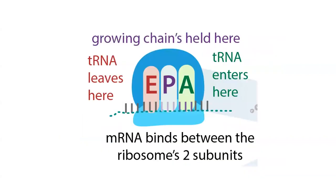Within the ribosome, you have the E, P, and A sites. The P site is the peptidyl site, where the growing chain is held. The A site — the aminoacyl or arrival site — is where the incoming tRNA comes in holding the amino acid corresponding to the codon currently in that site. After the pass-off, the old tRNA gets kicked into the E site, the exit site, where it falls out. Most of the time tRNAs enter through the A site, with the exception of initiation.